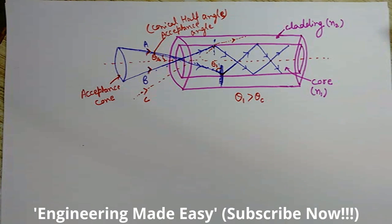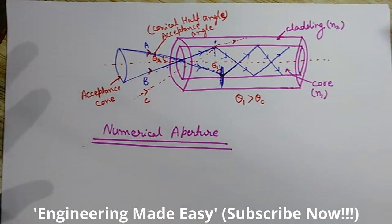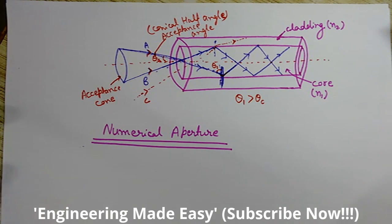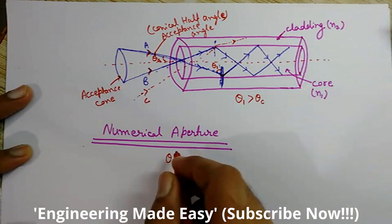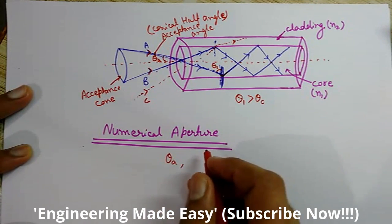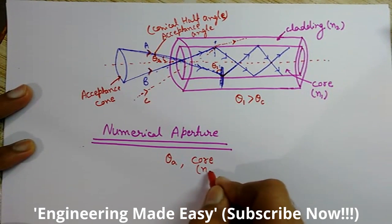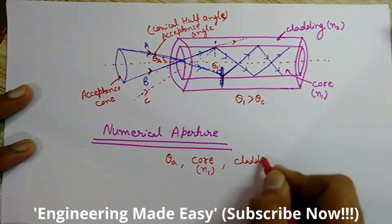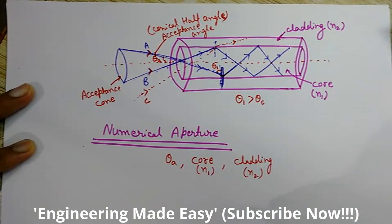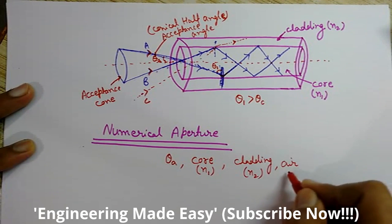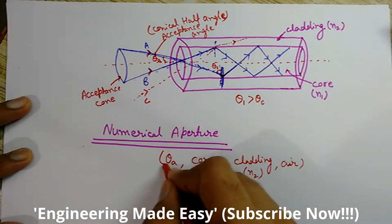Now we will discuss the numerical aperture. The numerical aperture of the optical fiber provides a very important relationship between the acceptance angle and the three different kinds of refractive indices involved in optical fiber communication — the core, cladding, and air. It relates the acceptance angle, the refractive index of the core (n1), the refractive index of the cladding (n2), and also the refractive index of air.